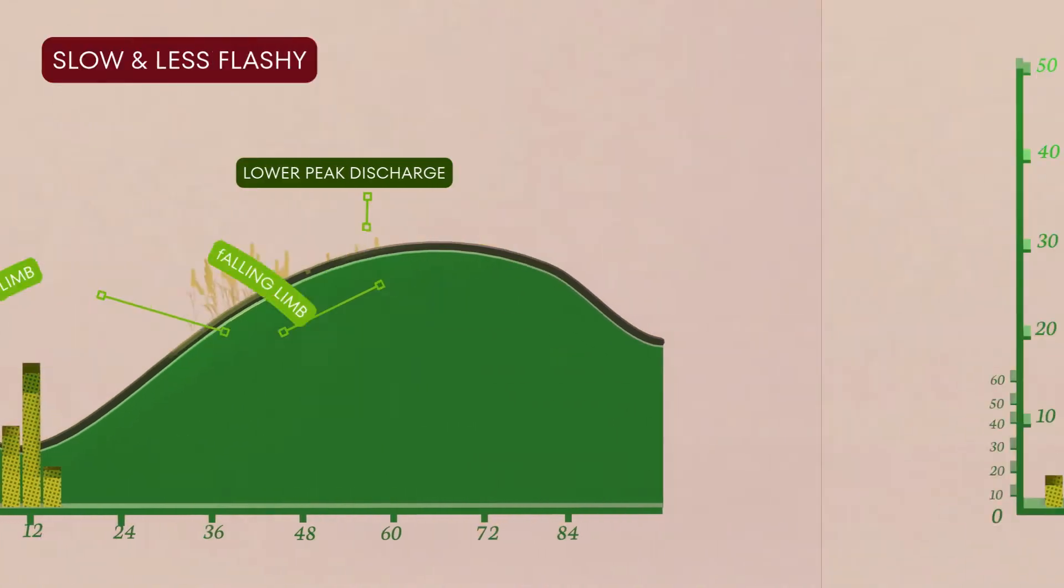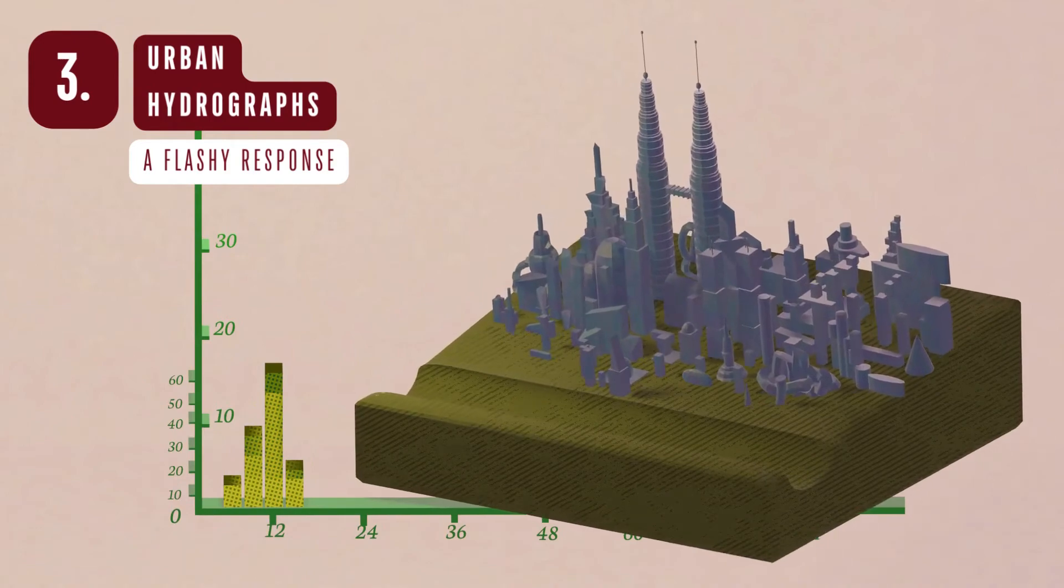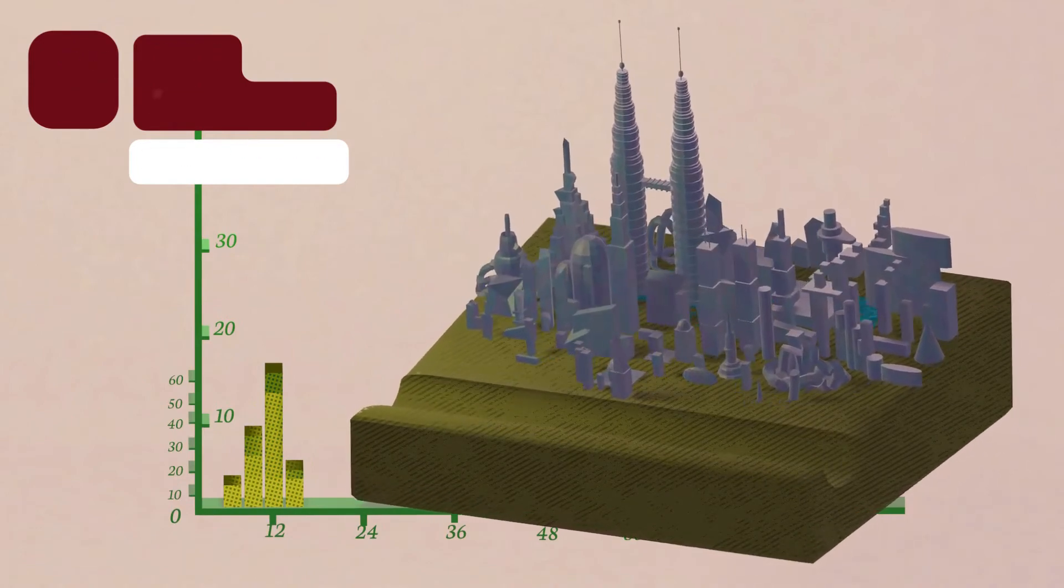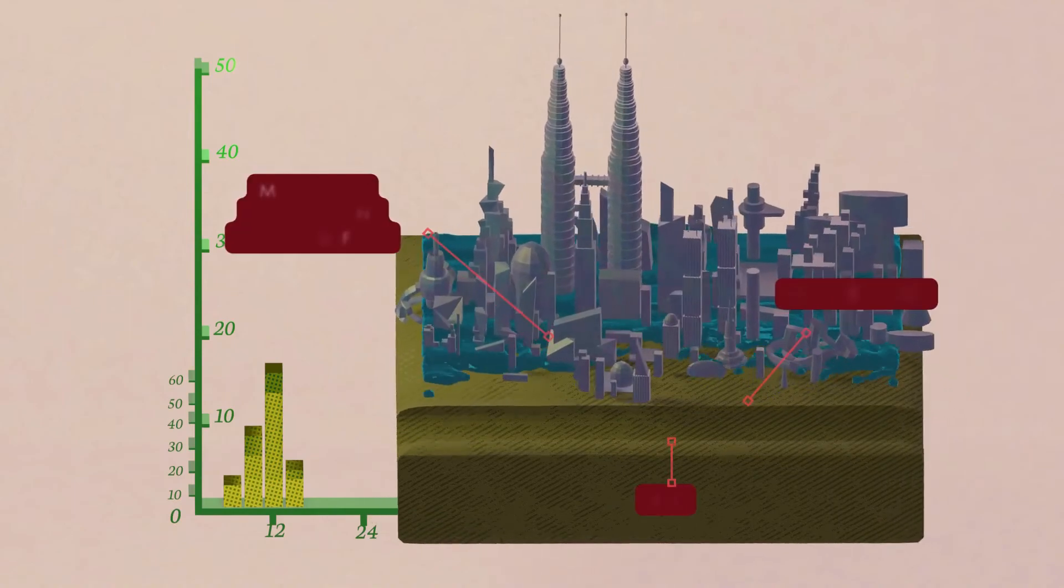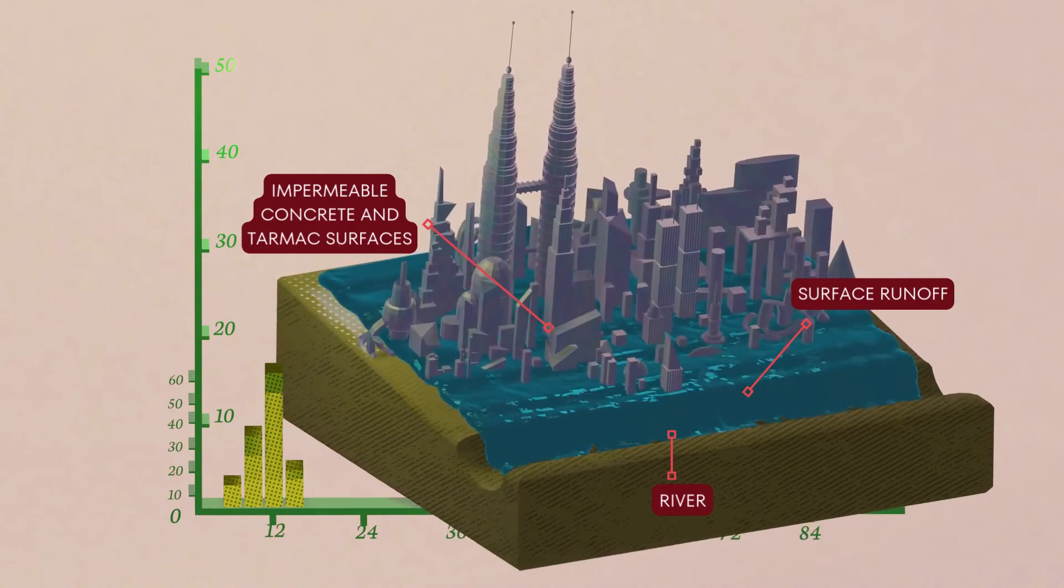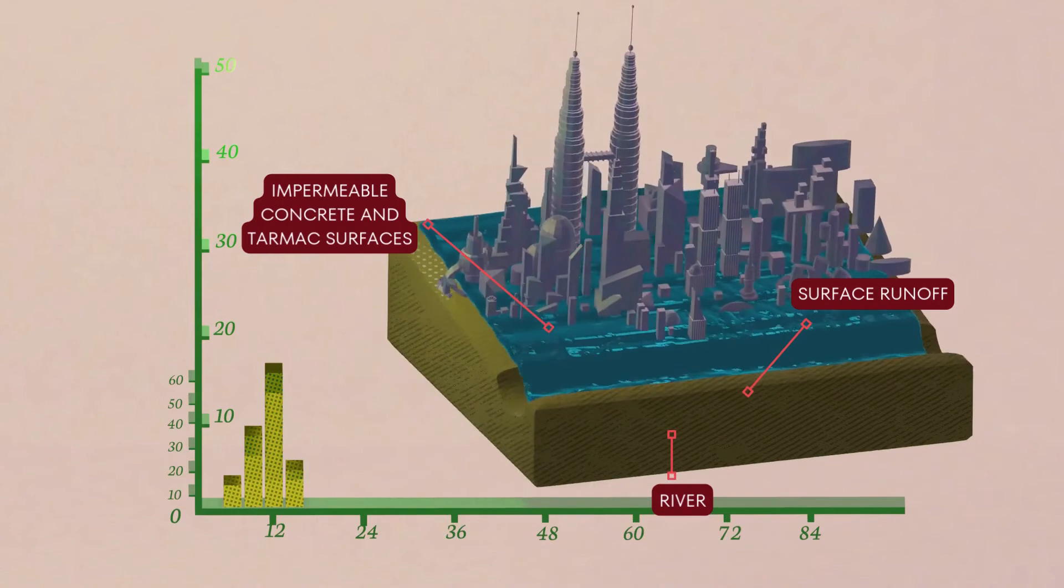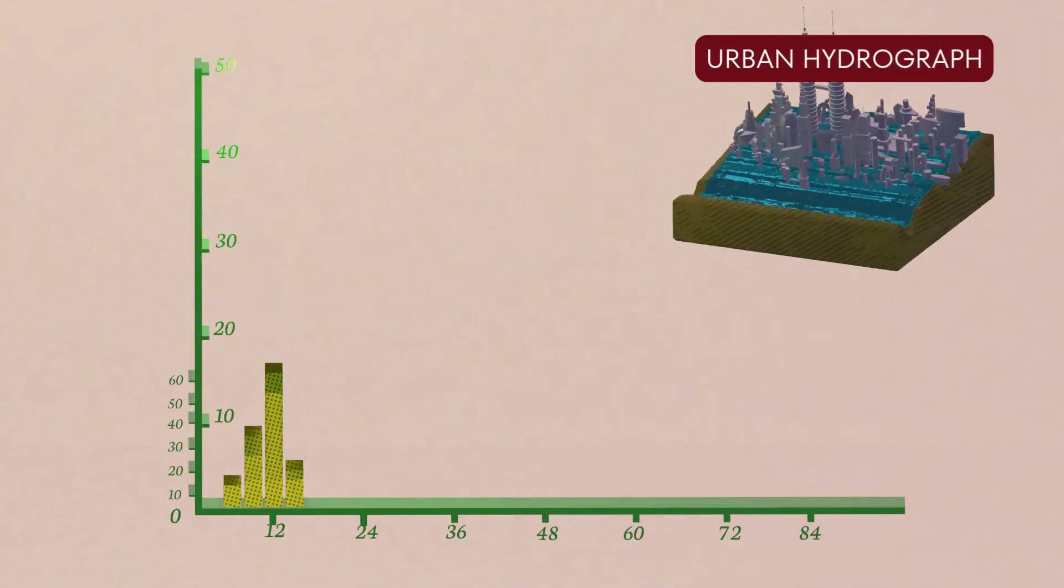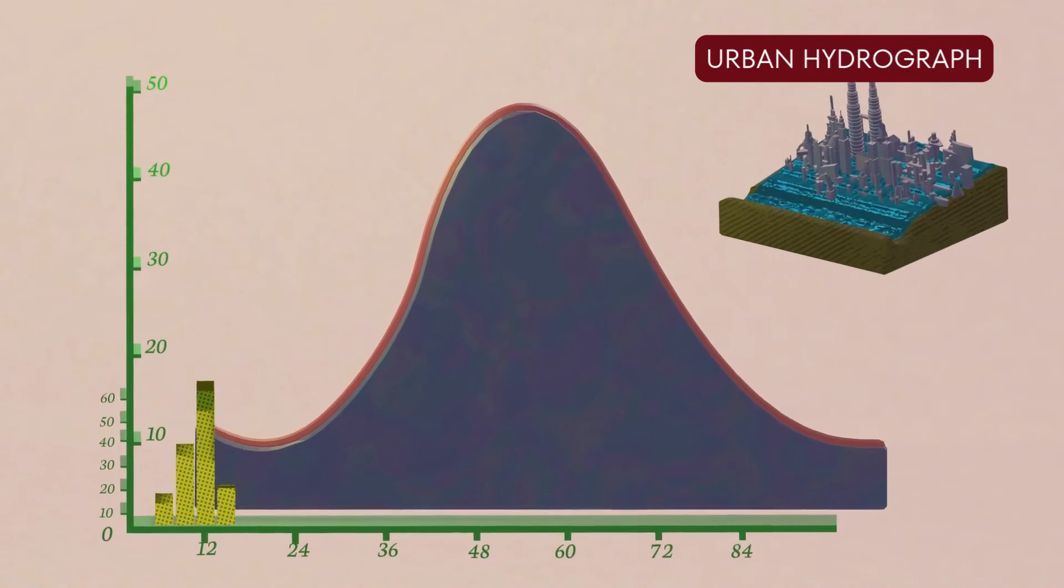In urban areas, areas with cities, roads and pavements, we get a much flashier and faster response. These are areas that have lots of impermeable surfaces, like concrete and tarmac. Water flows quickly over the surface using surface runoff, and it reaches the river faster through drains and gutters.